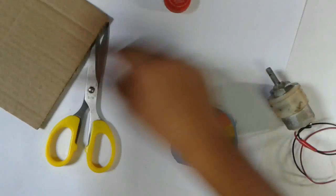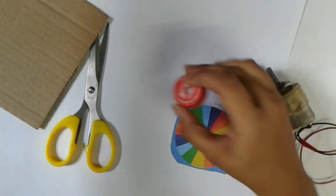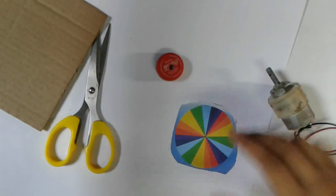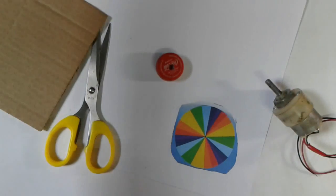You need the printout of Newton color disk and cardboard and a bottle cap to attach the Newton color disk to the motor shaft. So let's start.